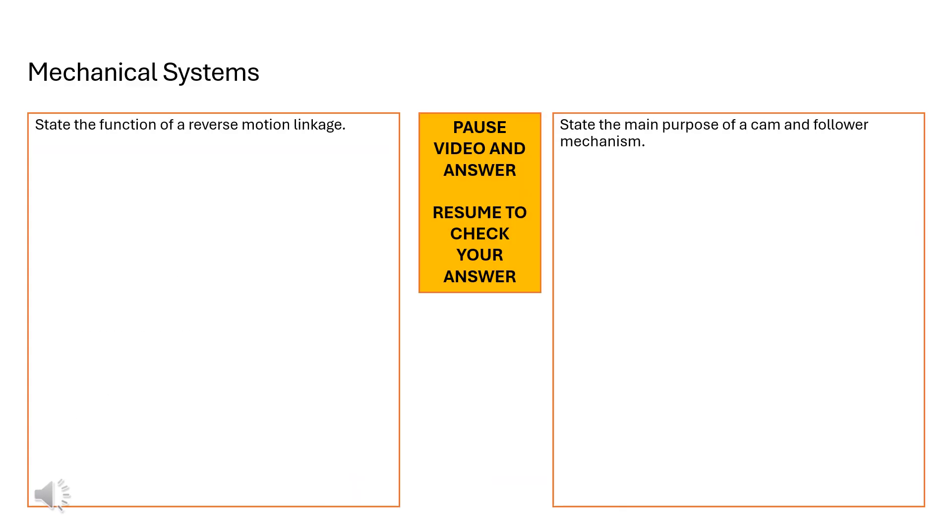These next two questions are slightly simpler and slightly shorter answers. They say state the function of a reverse motor linkage and state the main purpose of a cam and a follower mechanism. Pause the video at this point, try your question and then resume to see how you could answer it.